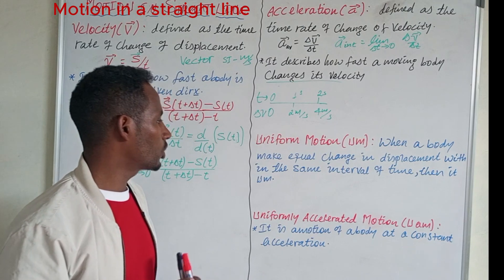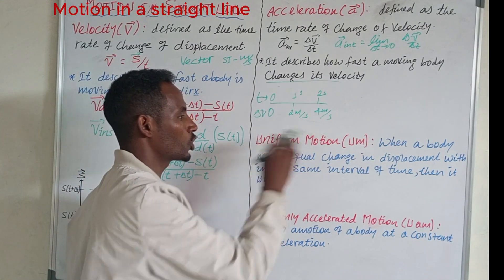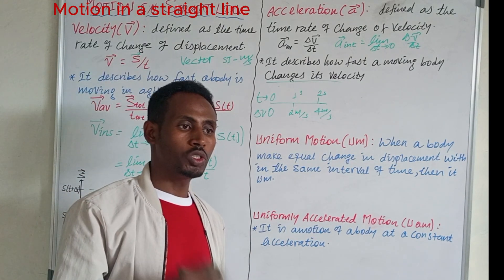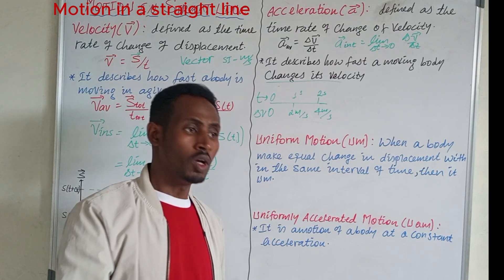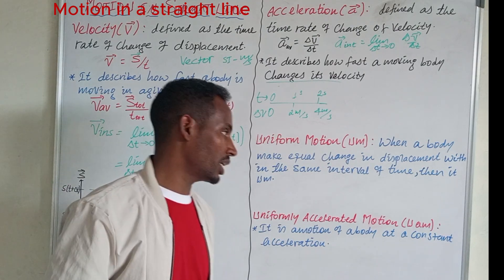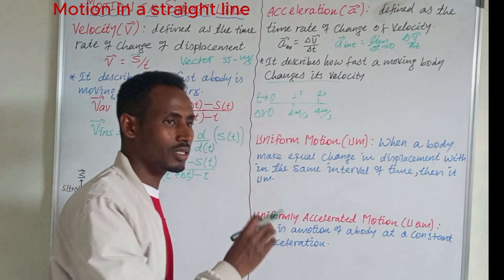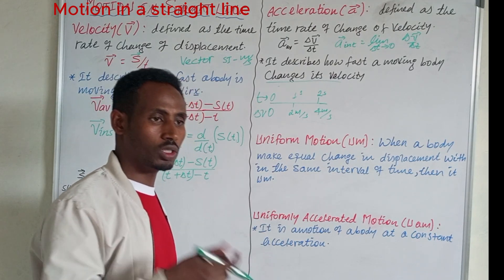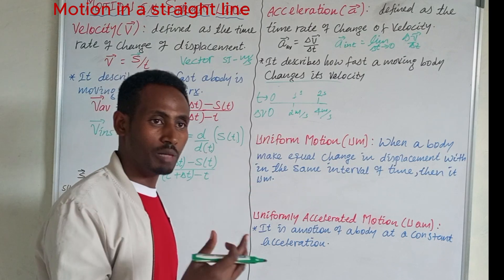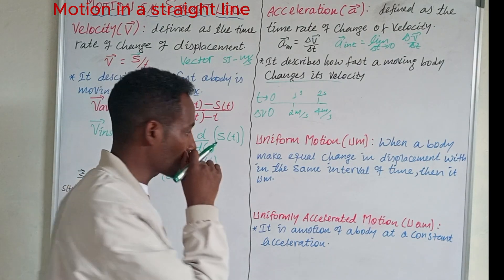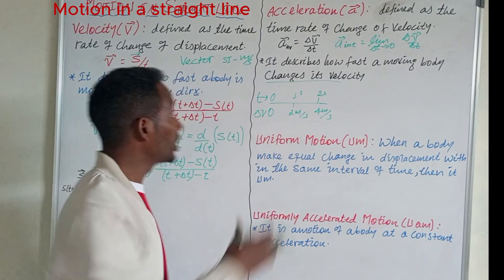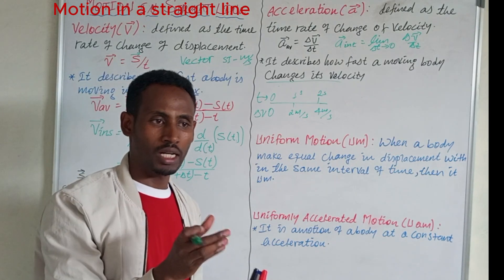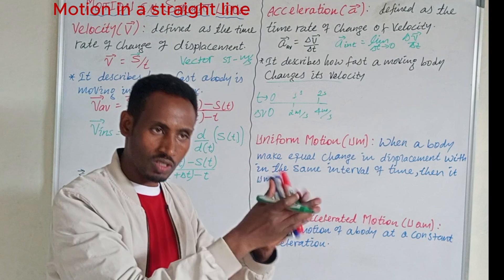Uniform motion is the motion of an object which takes place at a constant speed or velocity. The moving object's velocity does not change, so the motion is uniform motion. Equal distance is covered in equal time intervals. This is uniform motion — velocity is calculated by the speed on a straight line.